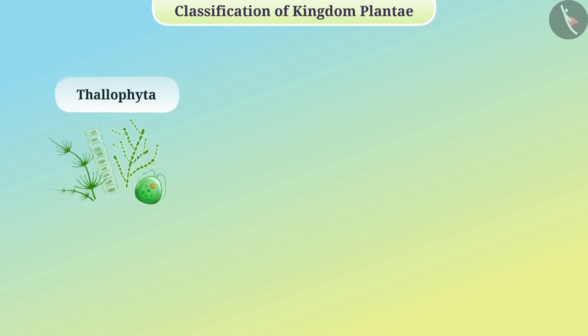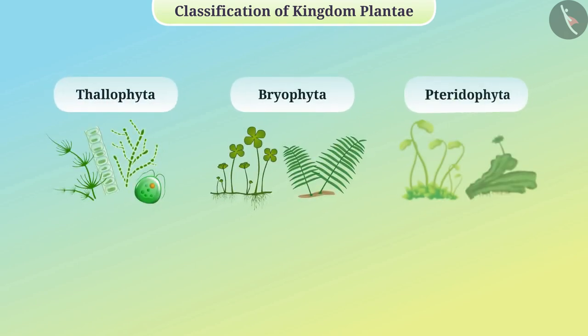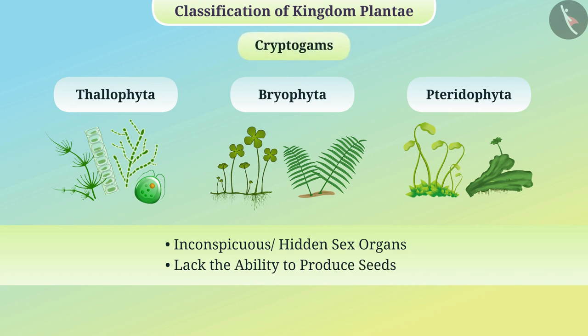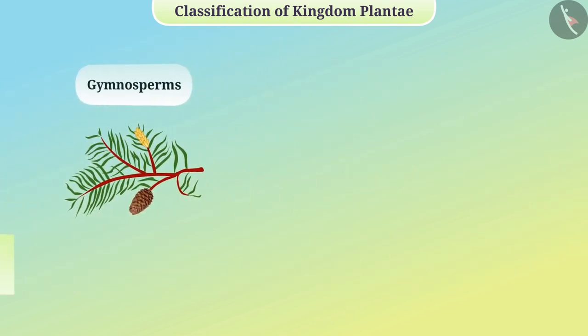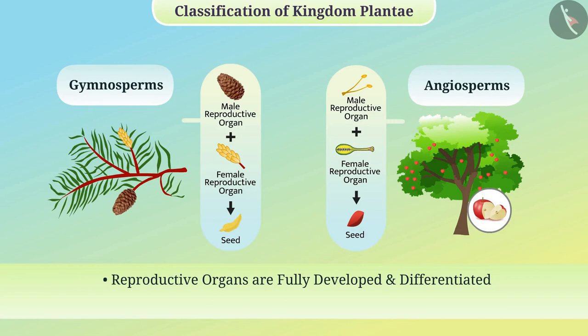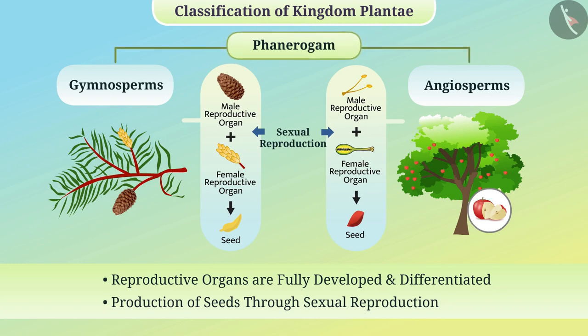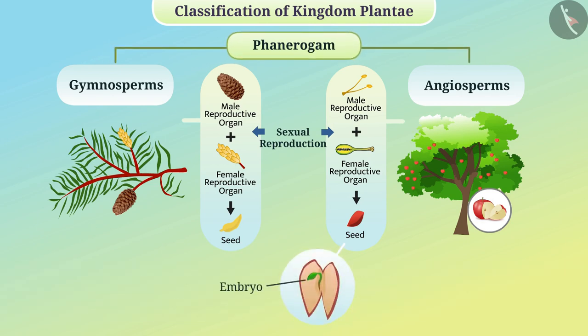Among them, Thalophyta, Bryophyta, and Pteridophyta — the plants in these three groups have very inconspicuous or hidden sex organs and lack the ability to produce seeds, so they are called cryptogams. But in gymnosperms and angiosperms, the reproductive organs are fully developed and differentiated; they produce seeds through sexual reproduction, so these groups are called phanerogams. The seeds consist of an embryo along with stored food, which nourishes the embryo as it develops into a new organism.